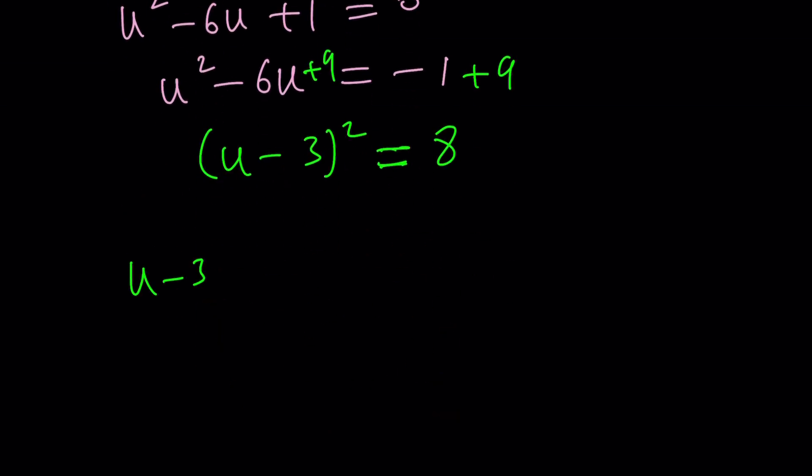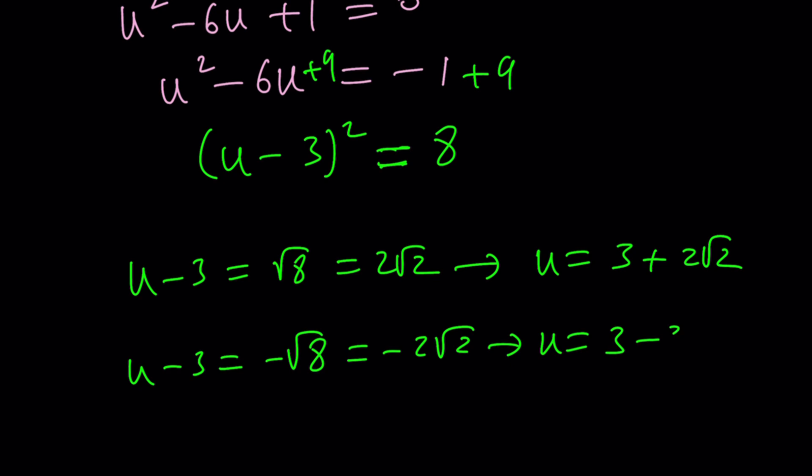Now, from here, we get two solutions. U minus 3 is square root of 8. Or U minus 3 is negative square root of 8. But square root of 8 is 2 root 2. And that's negative 2 root 2. Add 3 to both sides. You're going to get the solutions. U equals 3 plus 2 root 2. Or U equals 3 minus 2 root 2. Awesome.